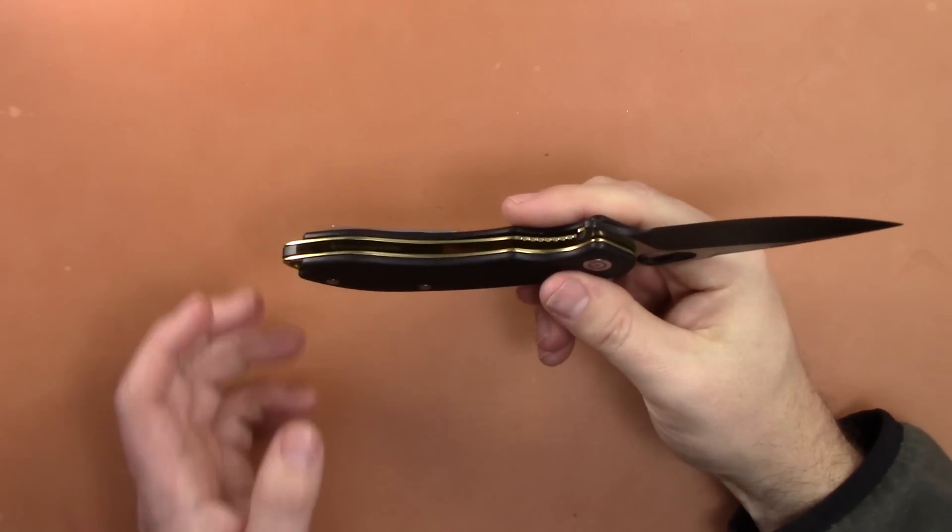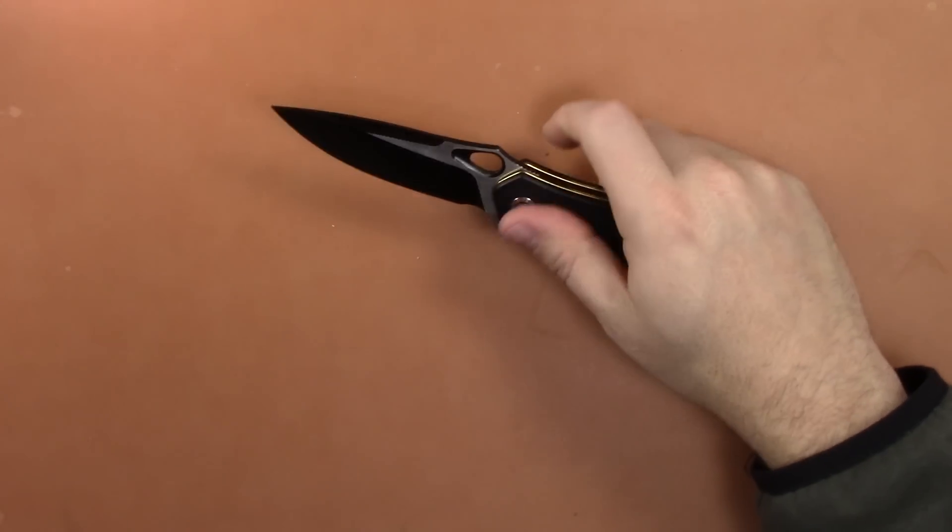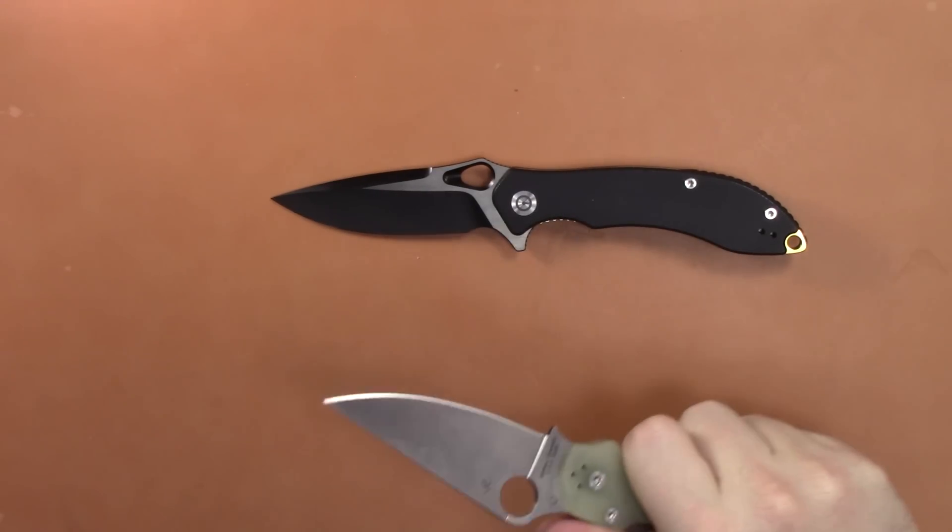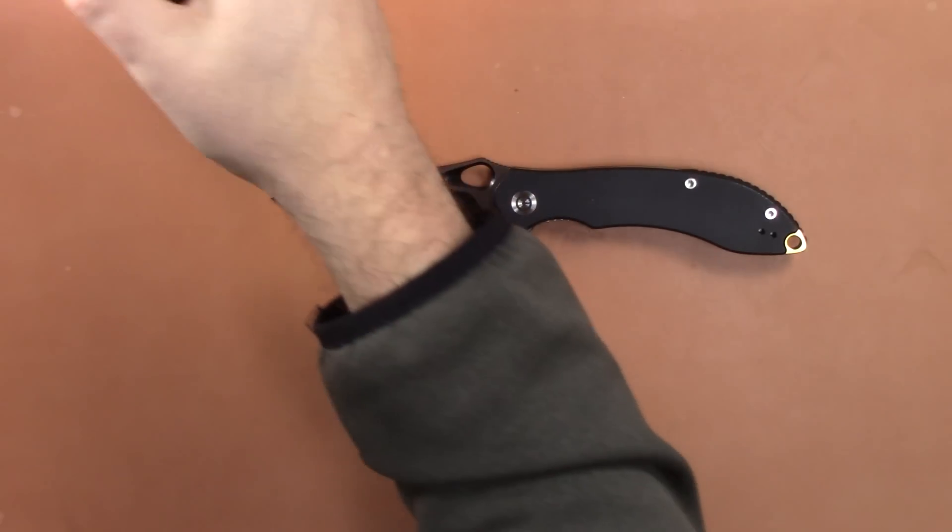One of the most ergonomic handles that I've ever felt in a knife right here. That's saying a lot. The Para 2 has really good ergos. You know what? This is better. It really is. Just filling that in my hand and filling this in my hand, the Aguila is better.